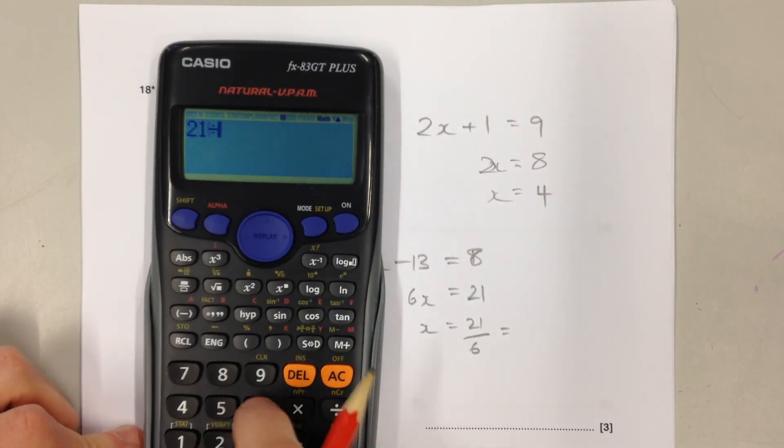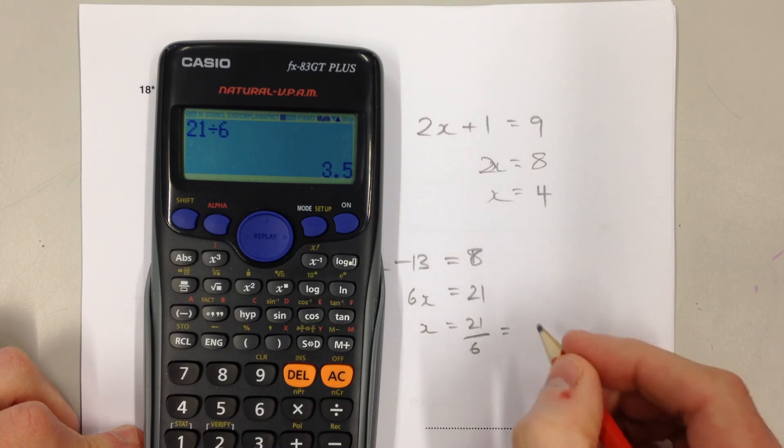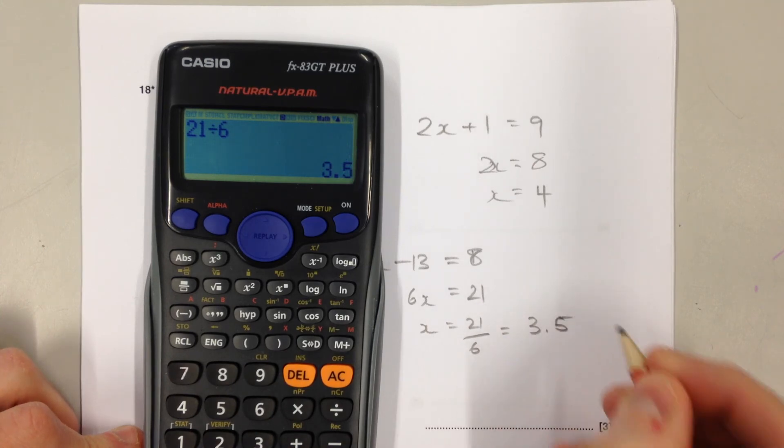Calculate on paper: 21 divided by 6 equals 7 over 2, or x equals 3.5.